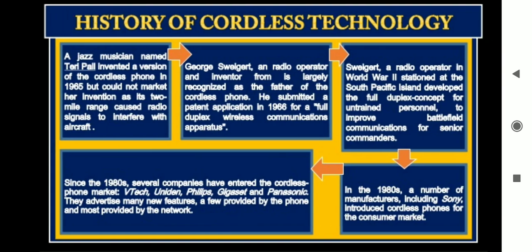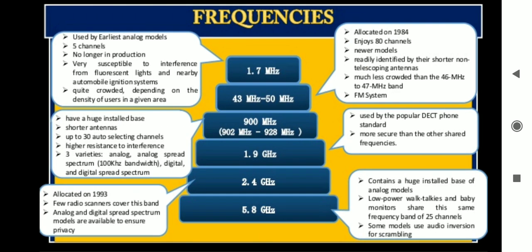This is the history of cordless technology in short. The frequency ranges used over time are: 1.7 MHz, 43 MHz, 250 MHz, 900 MHz, 1.9 GHz, 2.4 GHz, and 5.8 GHz.